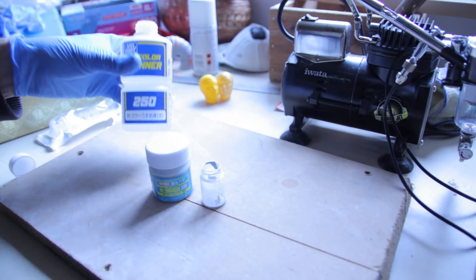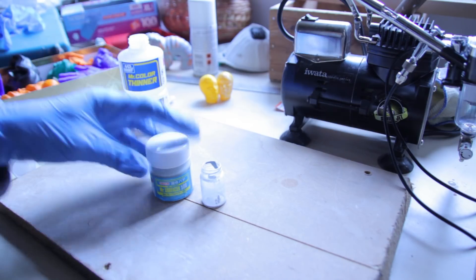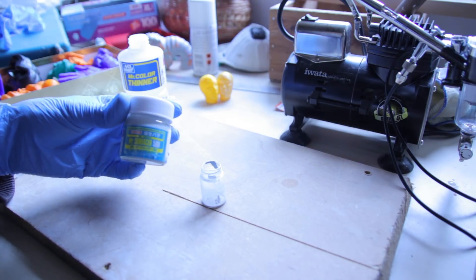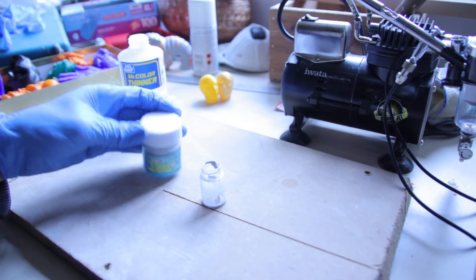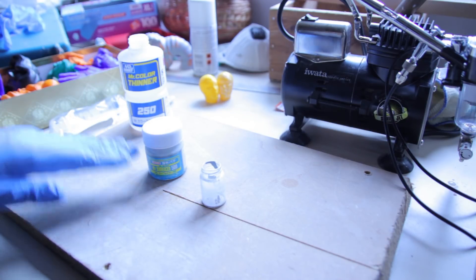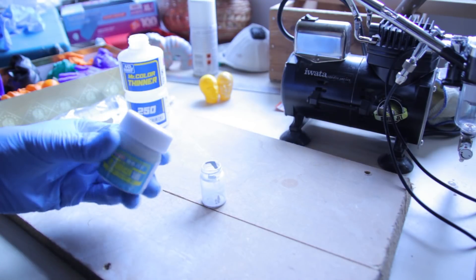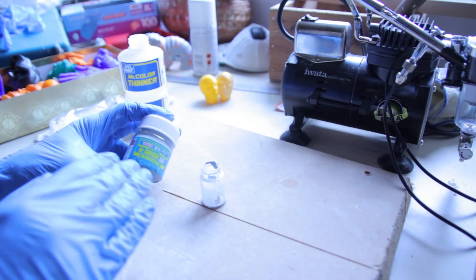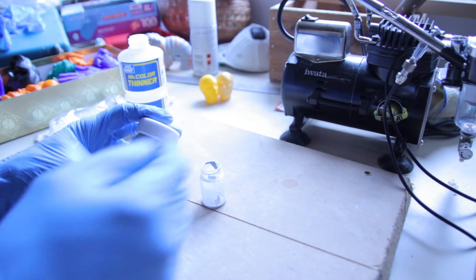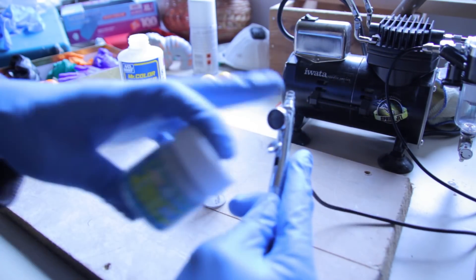And then I'm using Mr. Thinner and Mr. Surfacer 500 and I'm going to split this one 50-50 basically because this is just too thick for an airbrush. They say everything should have a milky consistency when it goes inside the hole here.